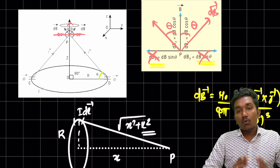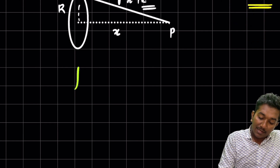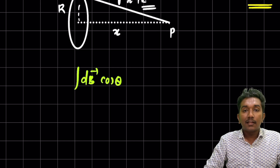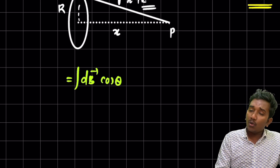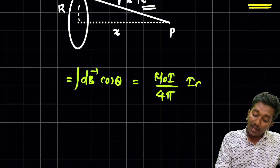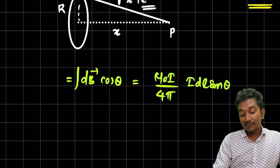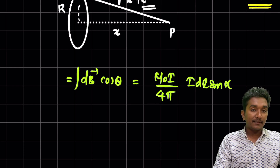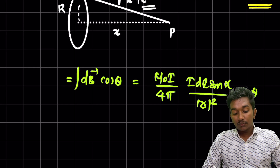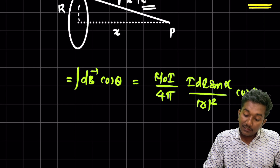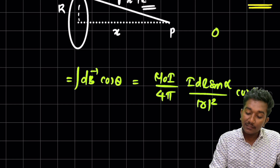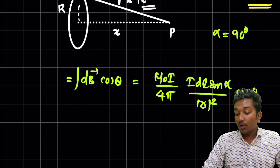So the net magnetic field B is the integral of dB cosθ over the full circle. Substituting the expression for dB: B = ∫ (μ₀/4π) × (i dl sinα / r²) × cosθ. Now, sinα is the angle between dl and r. Let's clarify what sinα equals.